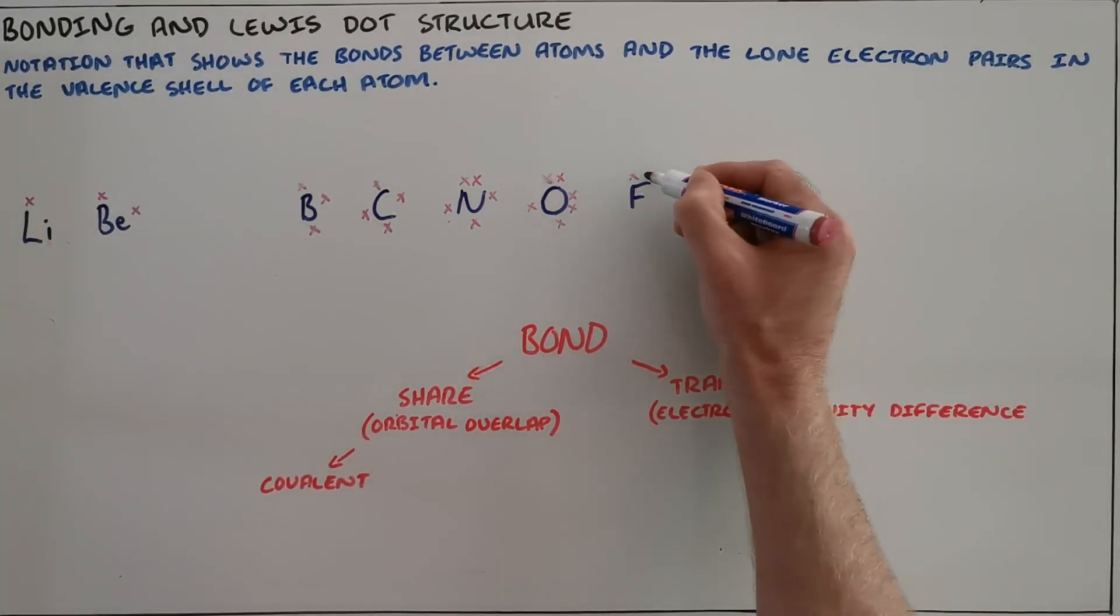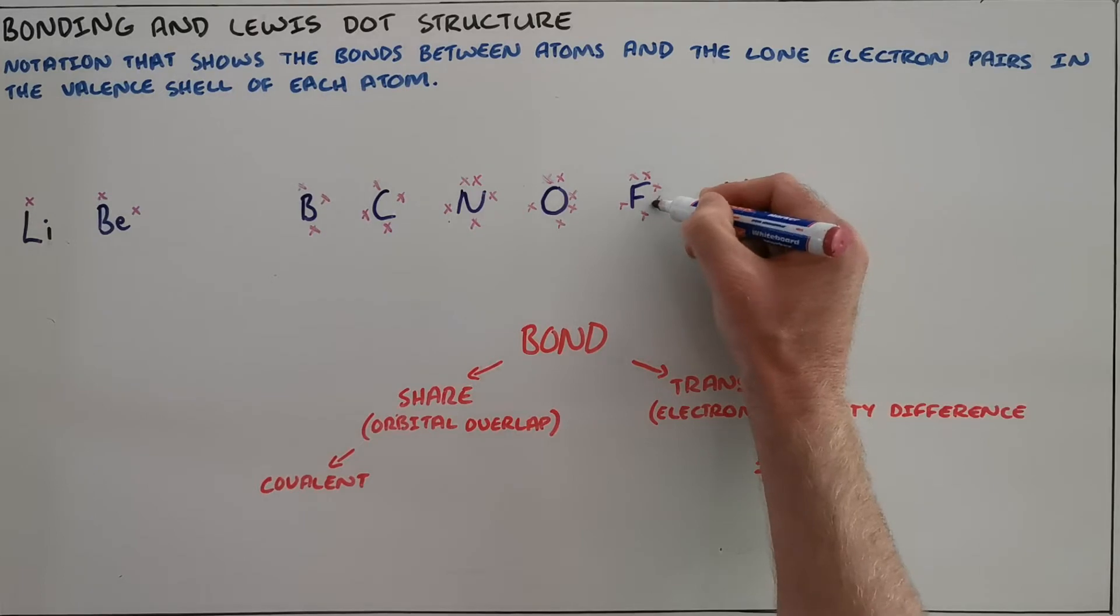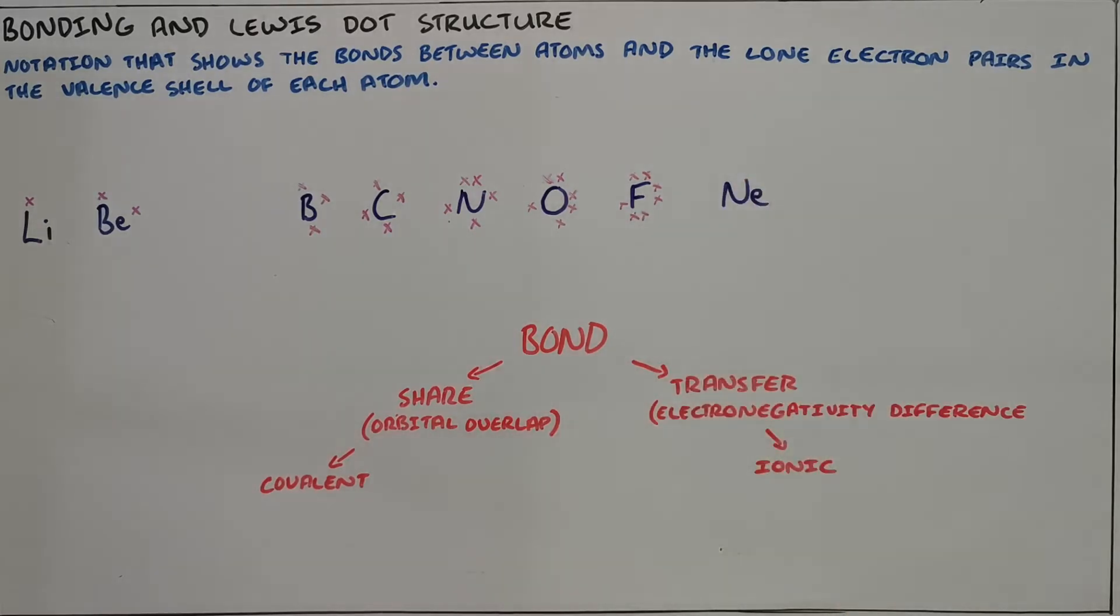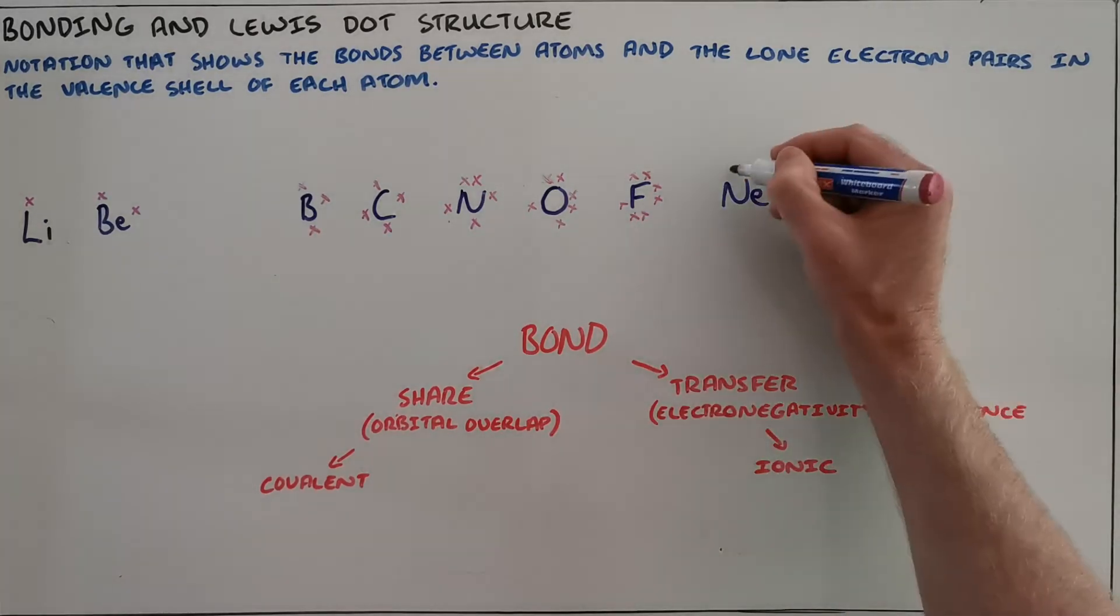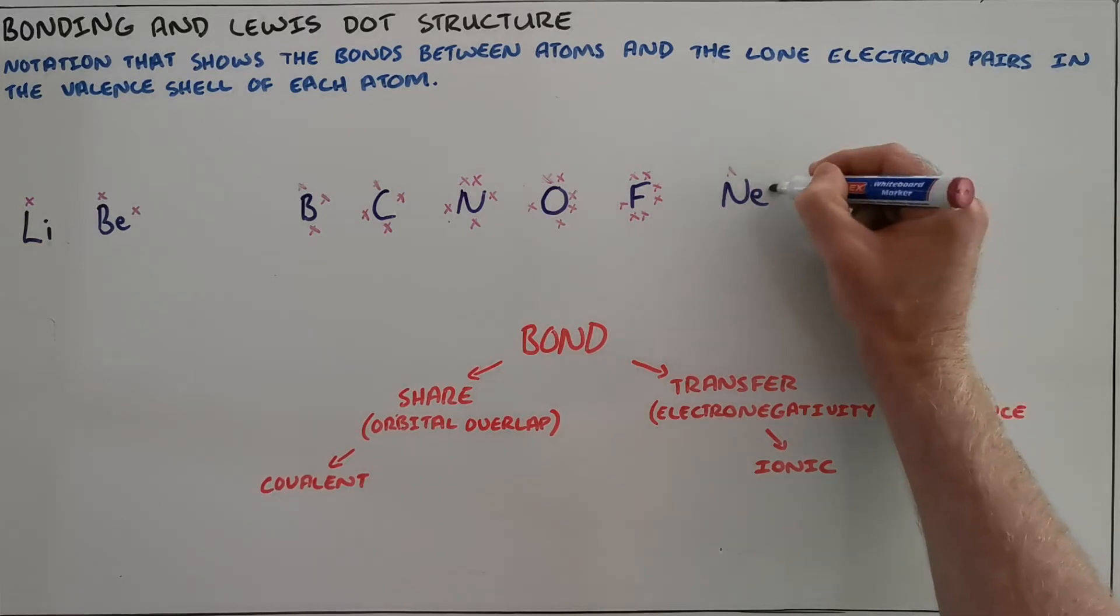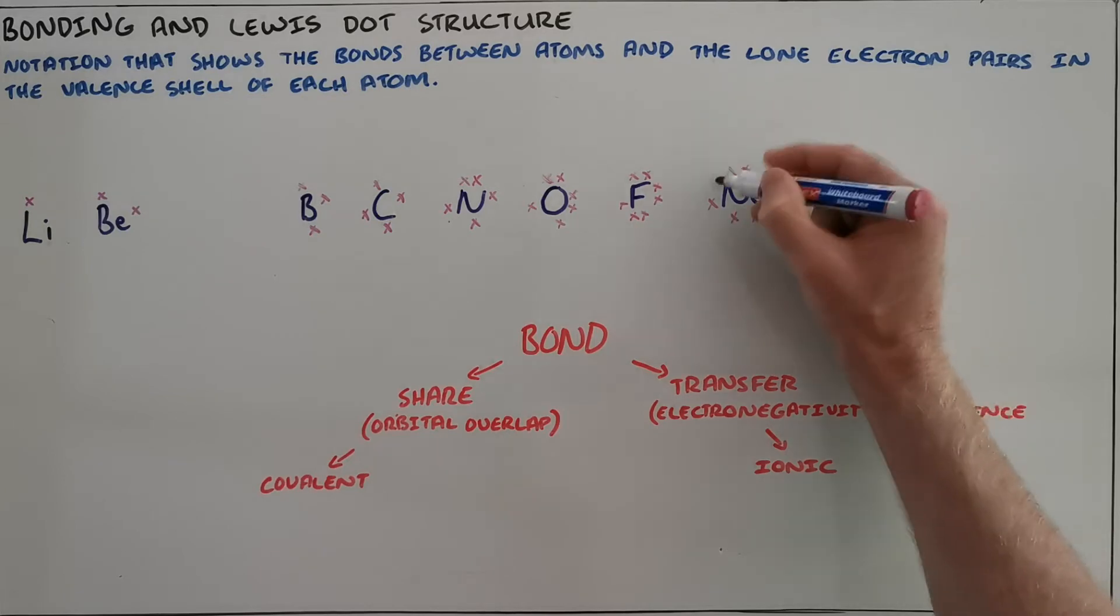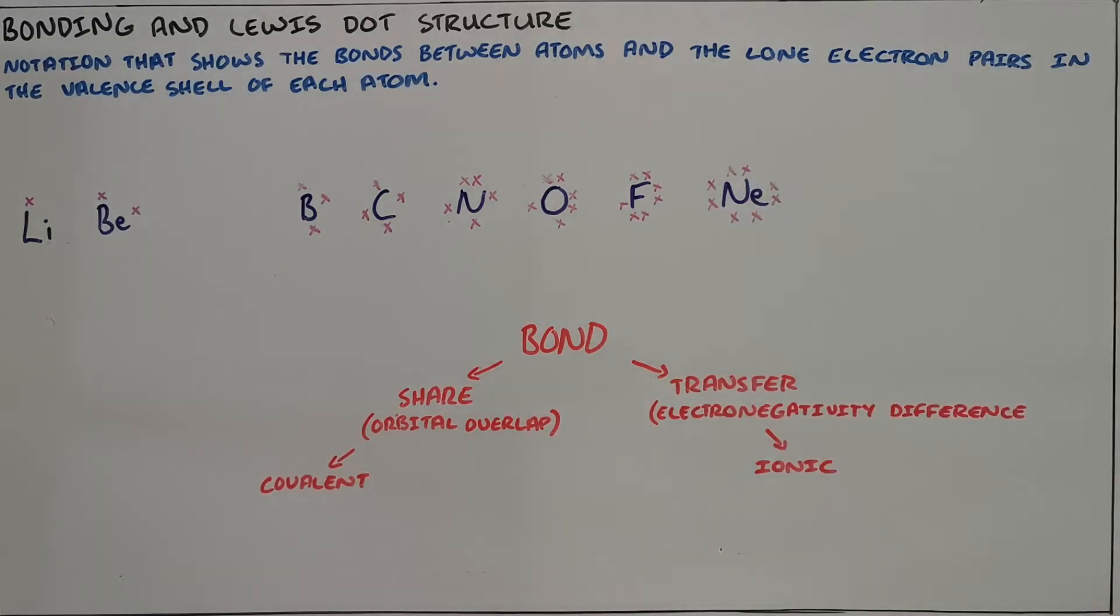Fluorine, being in group 17, has seven valence electrons, and we show that by filling each orbital with a single electron before placing two electrons in any orbital. Neon, along with all of the noble gases or group 18 elements, has eight valence electrons or a full valence shell, which is why none of our noble gases take part in bonding.